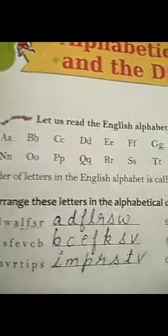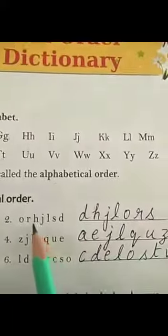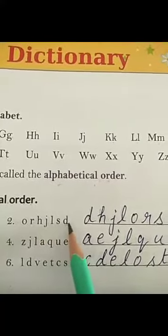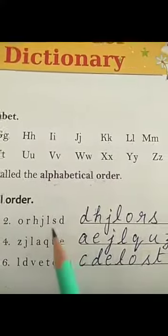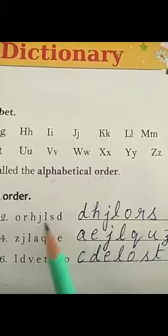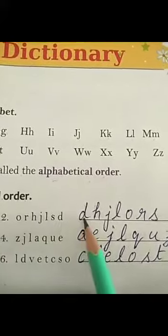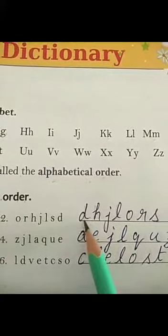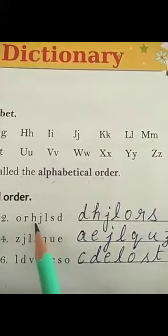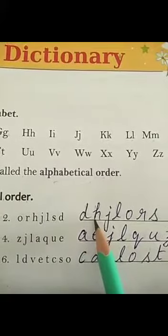In the same way, we will arrange the second question: O, R, H, J, L, S, D. So A, B, C — all these letters are not here. We have D. So we will write D at first place. And after D, according to alphabetical order, H comes. So we will write H at second place.